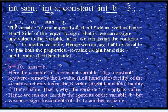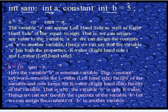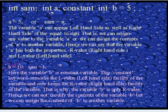Another operation is SAM = A, which means we can assign the contents of A to another variable SAM. The variable A can appear on the left-hand side as well as the right-hand side of the equal-to sign — we can assign any value to A, or assign the contents of A to another variable. Hence we say that variable A has both properties: R-value (right-hand side value) and L-value (left-hand side value).